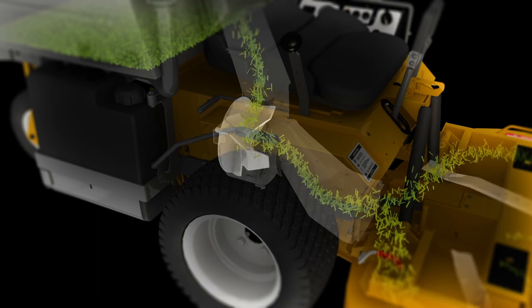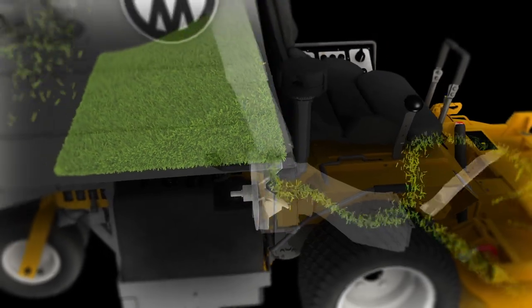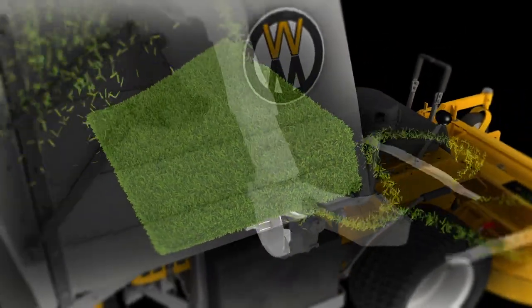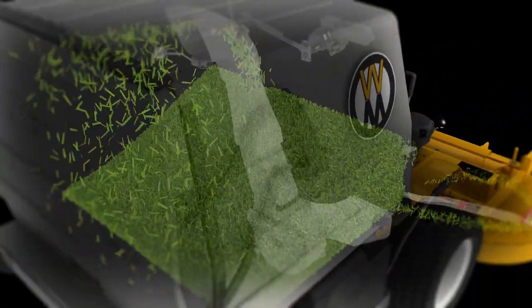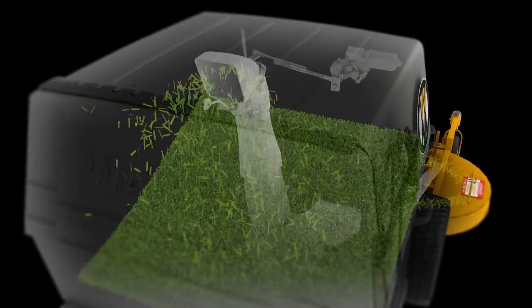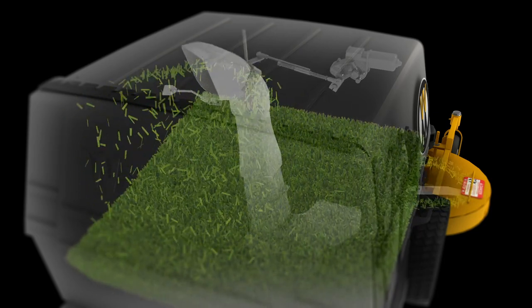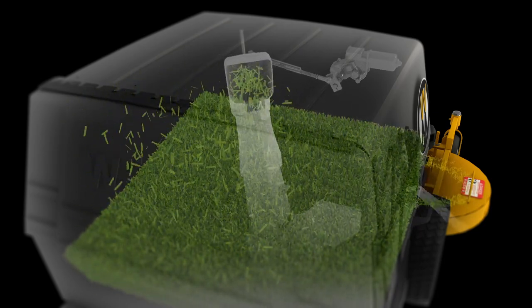As grass leaves the GHS blower, it is channeled up through the mower body into the catcher via the GHS body chute. The GHS body chute is connected to the GHS power fill delivery spout and drive. The power fill drive oscillates the delivery spout which helps evenly spread the clippings, packing them in the catcher, ensuring a full even fill every time.